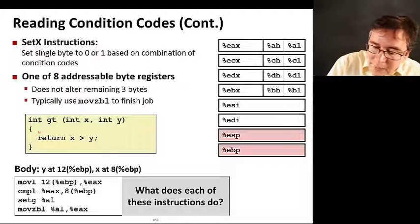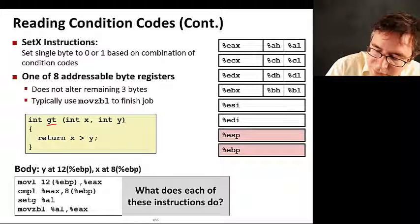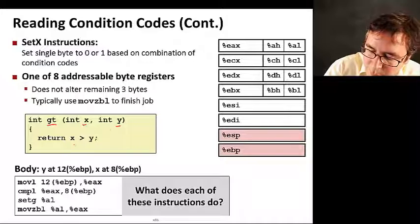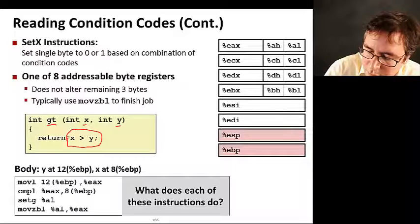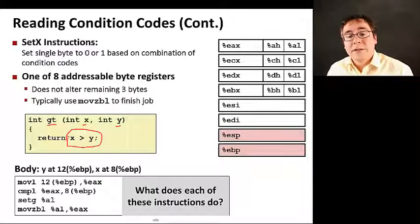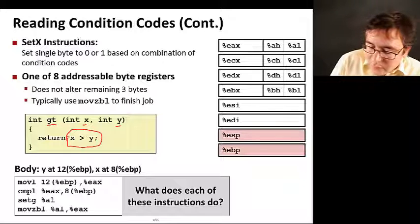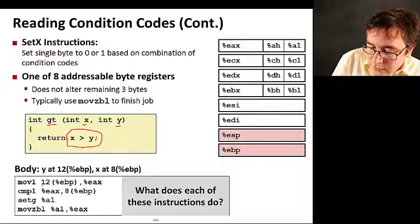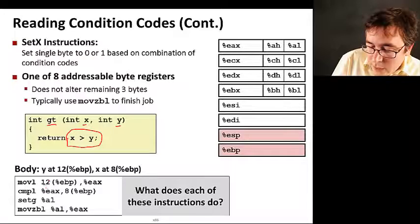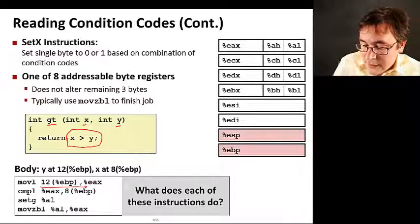Here we have a function called gt that takes x and y as a parameter, and then we want to return whether x is greater than y. Here's the body of the instruction.